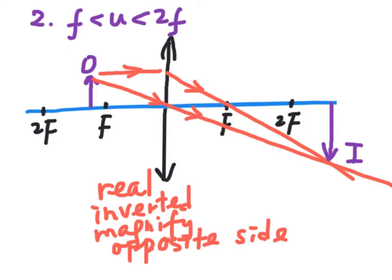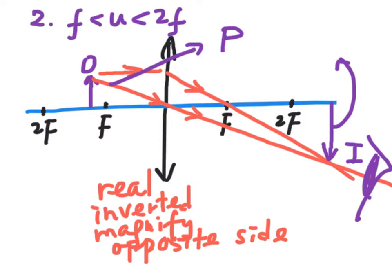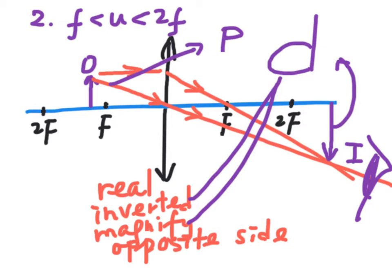If the object is the letter P, then the image will be inverted and magnified.